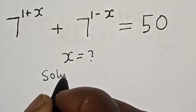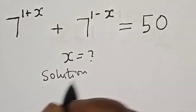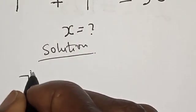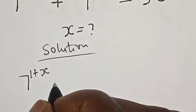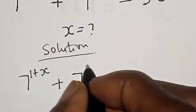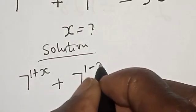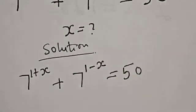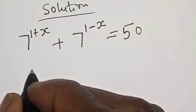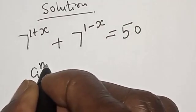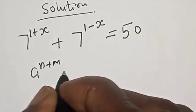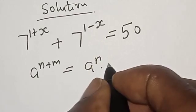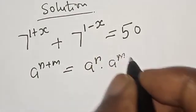Solution. We have the given equation: 7 raised to the power 1 plus s, plus 7 raised to the power 1 minus s, is equal to 50. Remember, if you have a base raised to the power n plus m, this is equal to the base raised to the power n multiplied by the base raised to the power m.